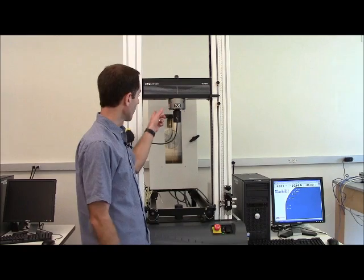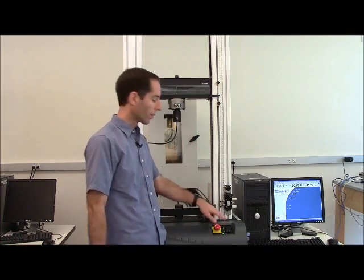With the grips removed, the machine on, and the Blue Hill software loaded, I can now raise the crossmember up above the temperature chamber that's behind. I need to have that high enough such that it clears when I roll the oven forward.